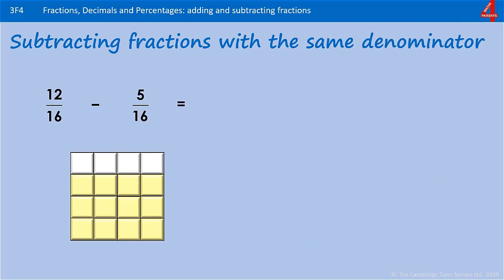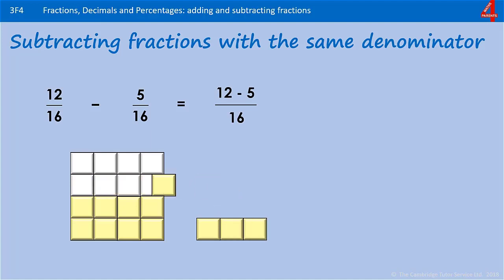Here's another one to have a go at: 12 sixteenths take away 5 sixteenths. Pause the video, have a go. Remember, we are looking for how many sixteenths we have. 12 take away 5 — how many sixteenths do we have left? That's 7 sixteenths.